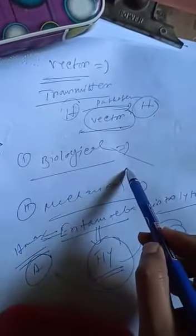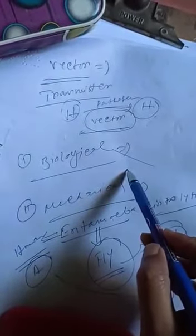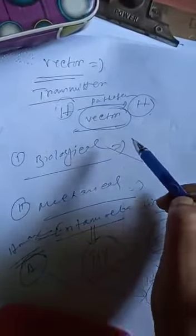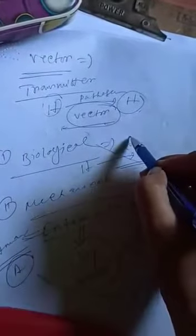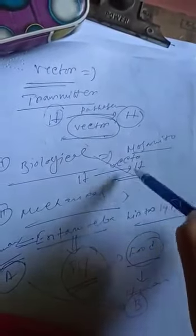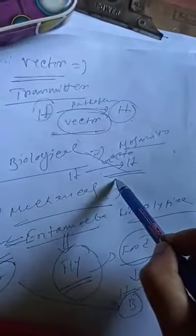Biological vector means a vector that carries a parasite or pathogen from one host to another host for transmission. But in this vector, a portion of the parasite's life cycle is actually completed within it. Then it is called biological vector.